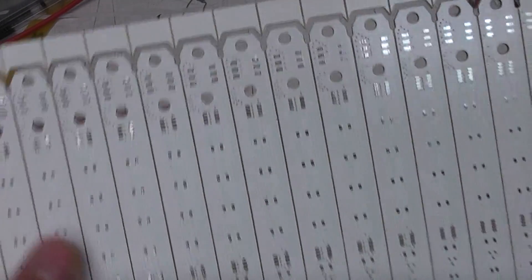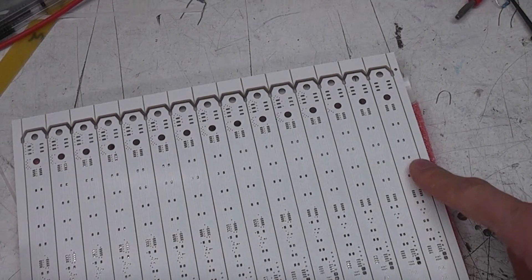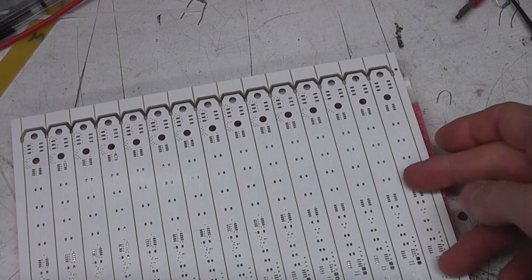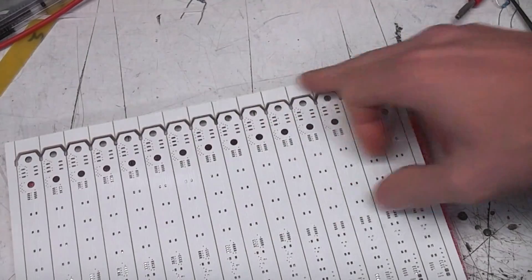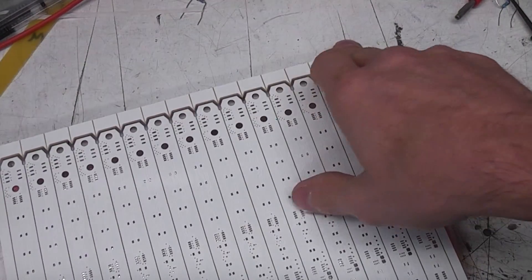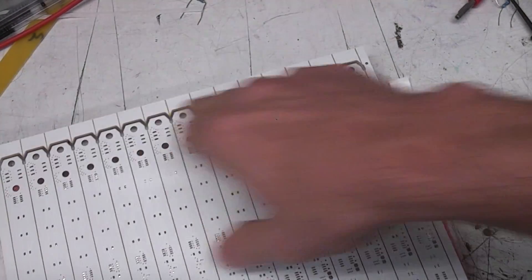But the other thing I wanted to do is be able to test them all in one go, just power up the whole panel. Now obviously the way you'd normally do that is you put some tracks on the waste part of the PCB to link them all together.